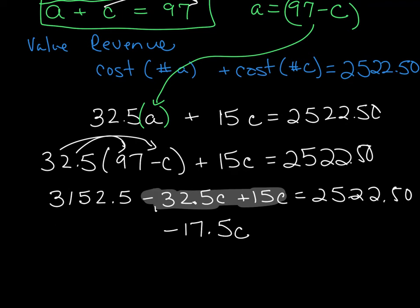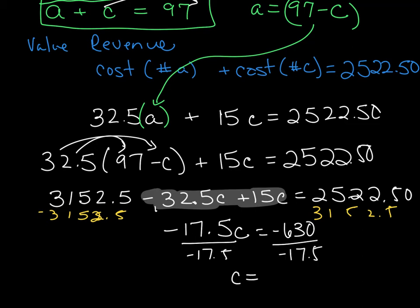And I'm just going to go ahead and do this right now. I'm also going to subtract my 3,152.5 from both sides of the equation at the same time, which equals negative 630, and we divide both sides by negative 17.5, and we get that the number of children is 36.